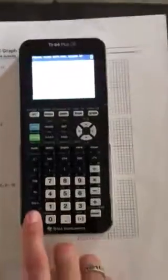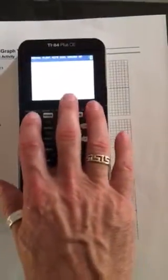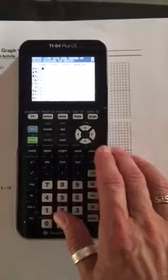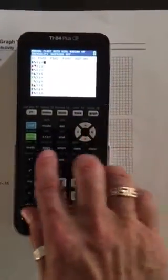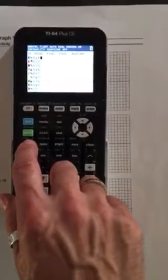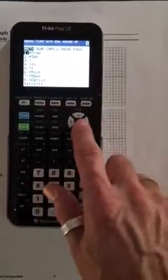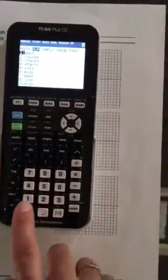We're going to turn it on, and we're going to go to the y equals, and in the first y1, we're going to type in the absolute value bars, which is math, arrow right, number 1.